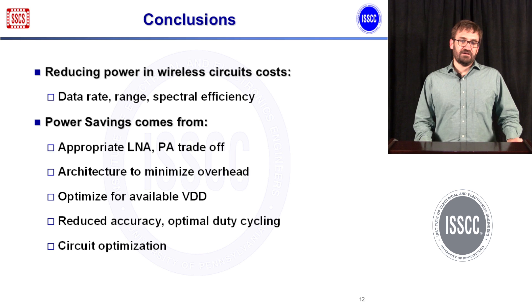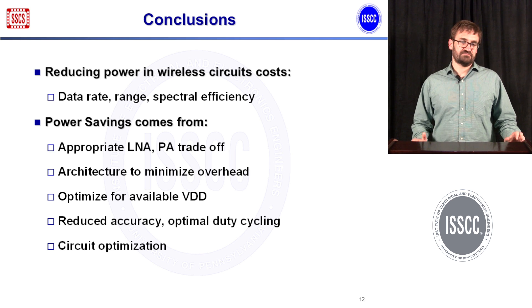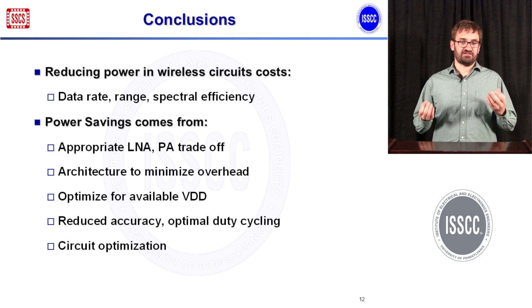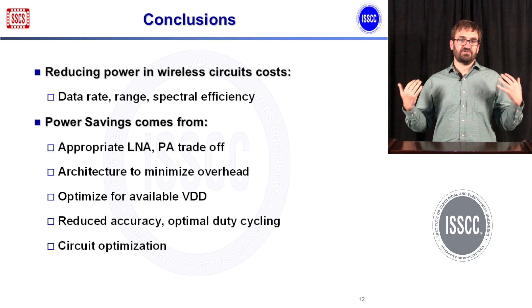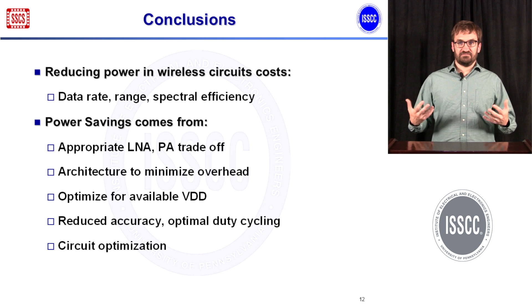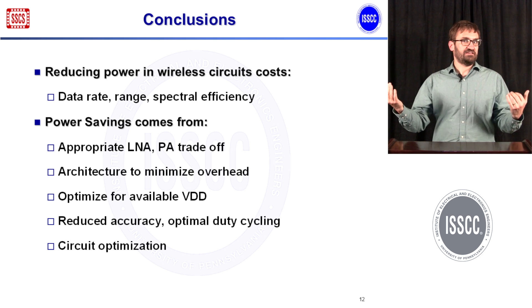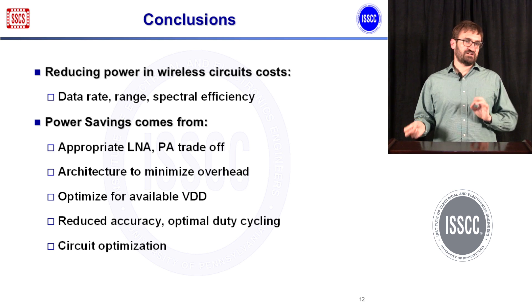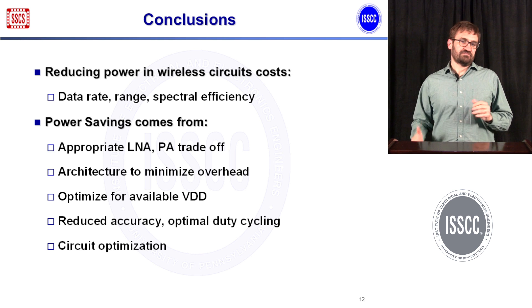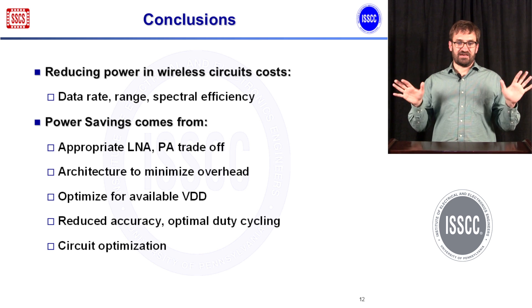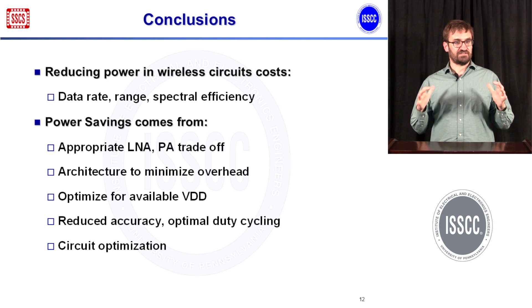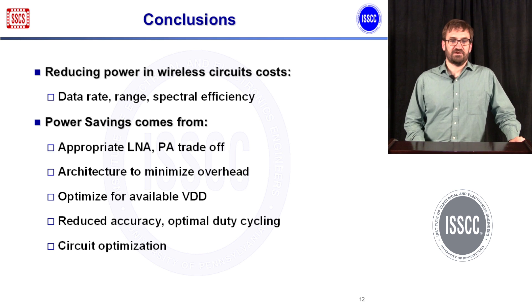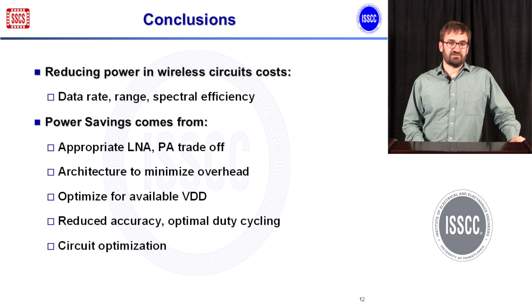In conclusion, you can reduce power in wireless circuits significantly, but typically at the cost of data rate, range, spectral efficiency, or all three. The path to power savings involves appropriately trading off LNA and PA power, architecting the system for low overhead, optimizing for the available VDD, accepting reduced frequency accuracy while co-designing with optimal duty cycling, and finally optimizing the circuitry itself. That's how you go about designing an efficient, low-power wireless system. Thank you.